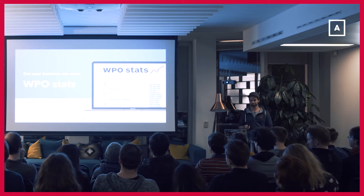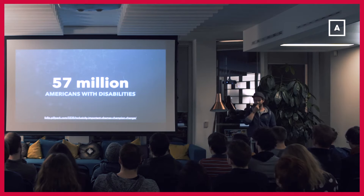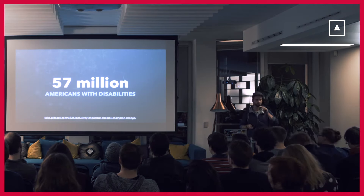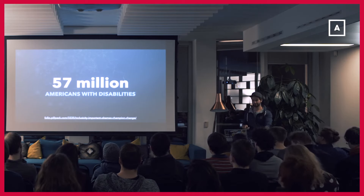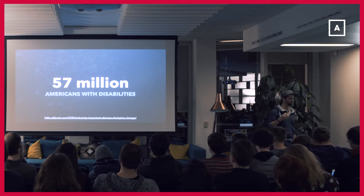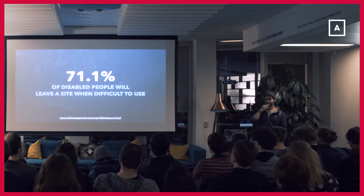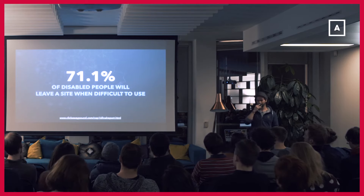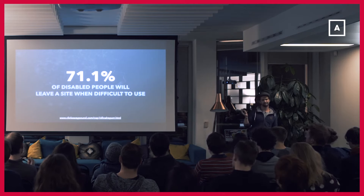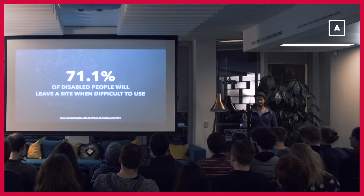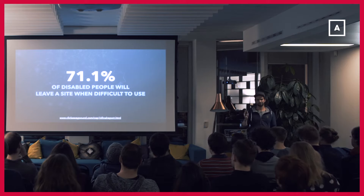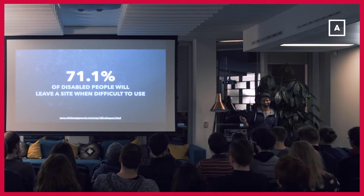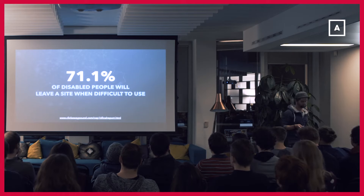In the United States, there are 57 million people with disabilities, and 70% of these people will leave your site and product when it's difficult to use. In the UK, there are 6.1 million people with a sort of impairment who will spend 16 billion pounds online this year. If 70% of those people decide to go — is this part of your conversion rate?